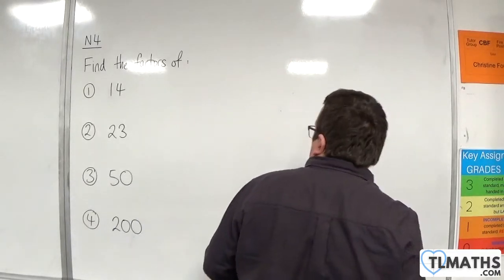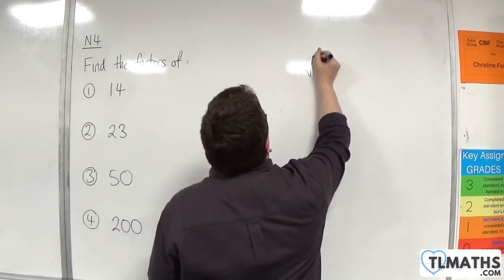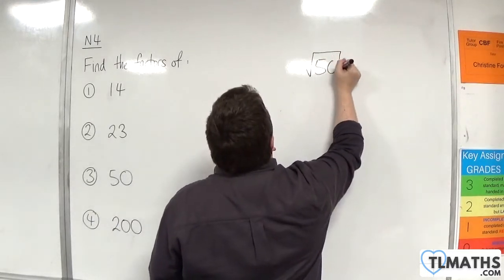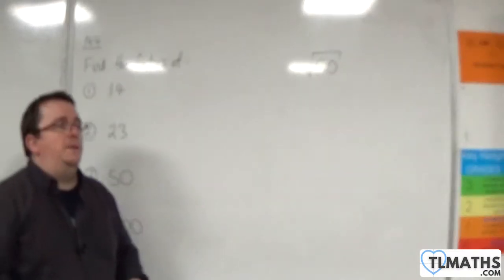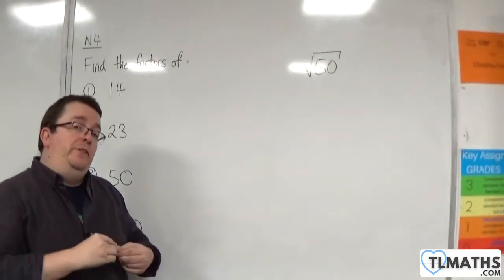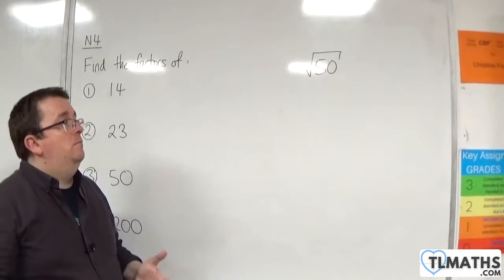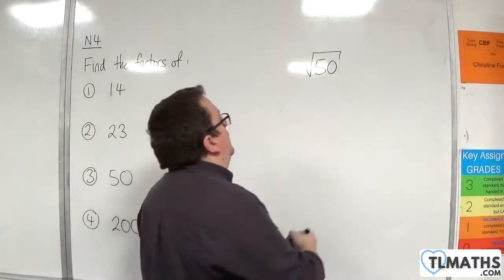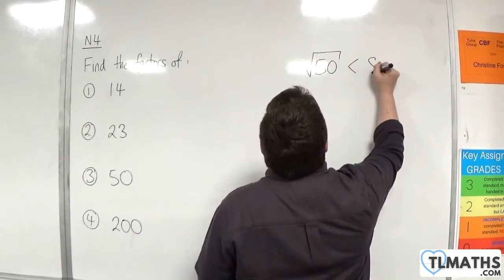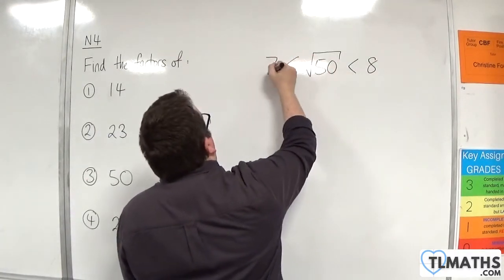How about 50? Which two square numbers is 50 between? Well, there's 7 squared, which is 49. And then we've got 8 squared, which is 64. So, this is going to be somewhere between 7 and 8.